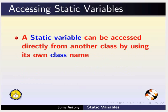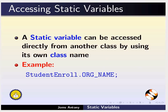A static variable can be accessed directly from another class by using its own class name. For example, student enroll dot ORG underscore name.